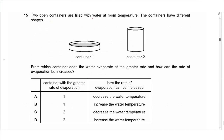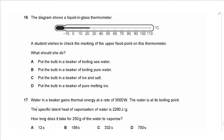Question 15: two open containers are filled with water at room temperature but have different shapes. The container with the greater surface area has a higher rate of evaporation, so it's container 1. Increasing the rate of evaporation requires increasing the water temperature, so the answer is B.